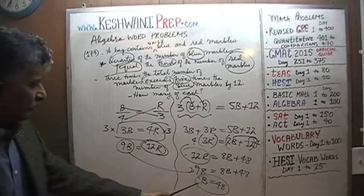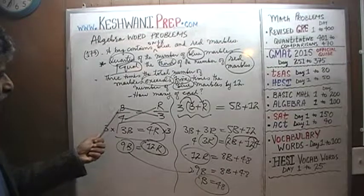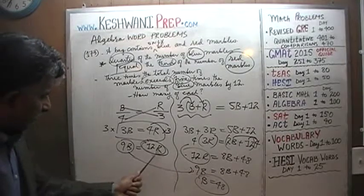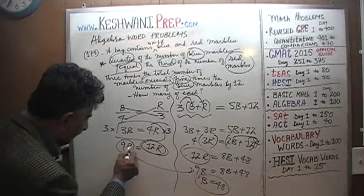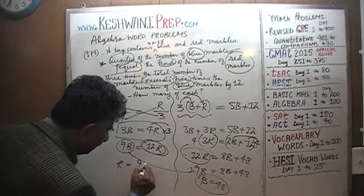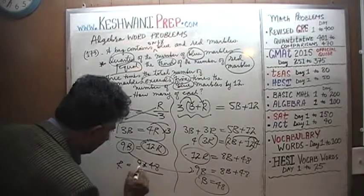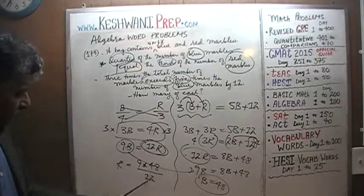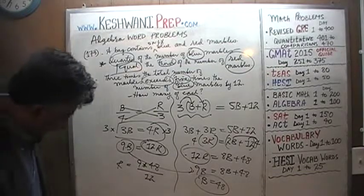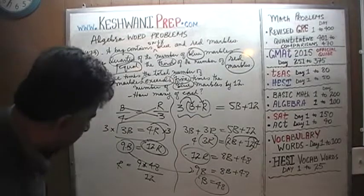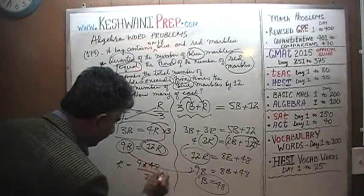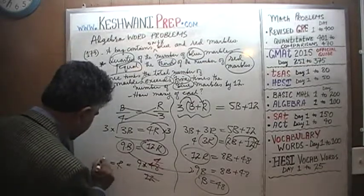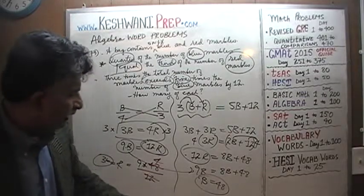Well done. Once we have the blue marbles, we can figure out the red marbles. From the equation 12R = 9B, and since B = 48, we get R = 9 × 48 / 12. Dividing top and bottom by 12: 48 divided by 12 is 4, so R = 9 × 4 = 36. We have 36 red marbles and 48 blue marbles.